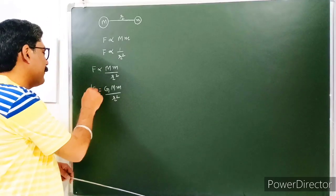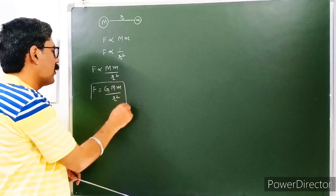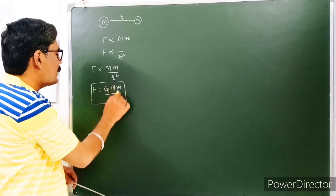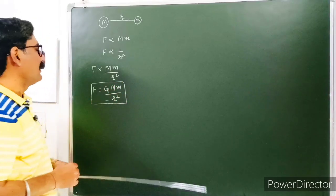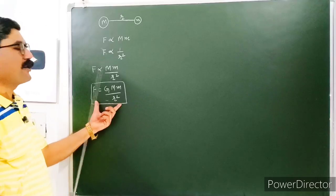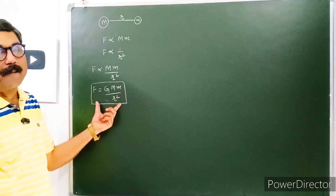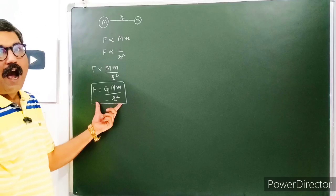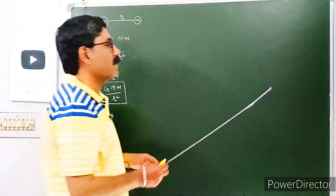So basically, this is the mathematical representation of Newton's law of gravitation, and this formula — Newton's law of gravitation — can be easily derived from Kepler's law of planetary motion. Let us proceed.